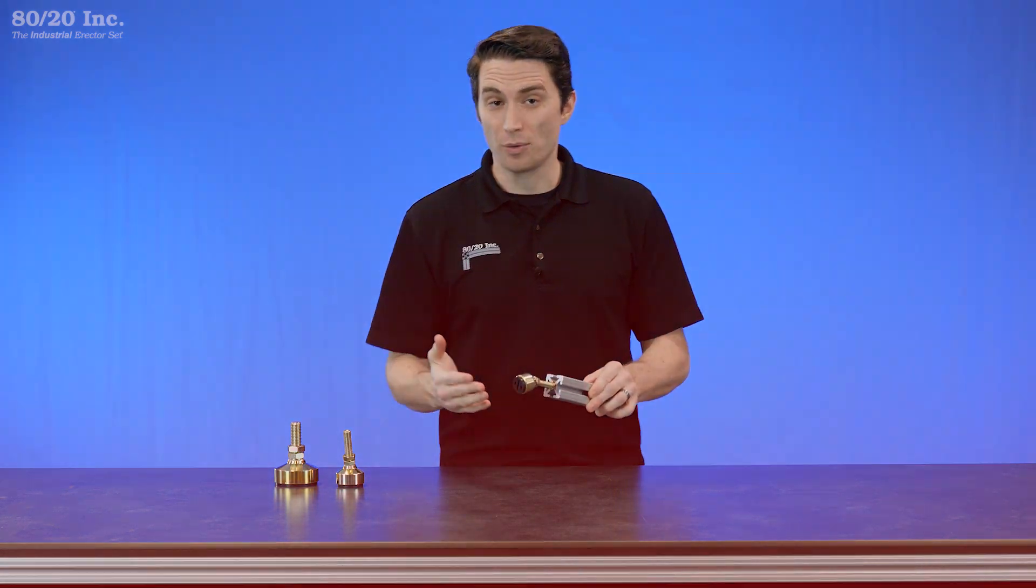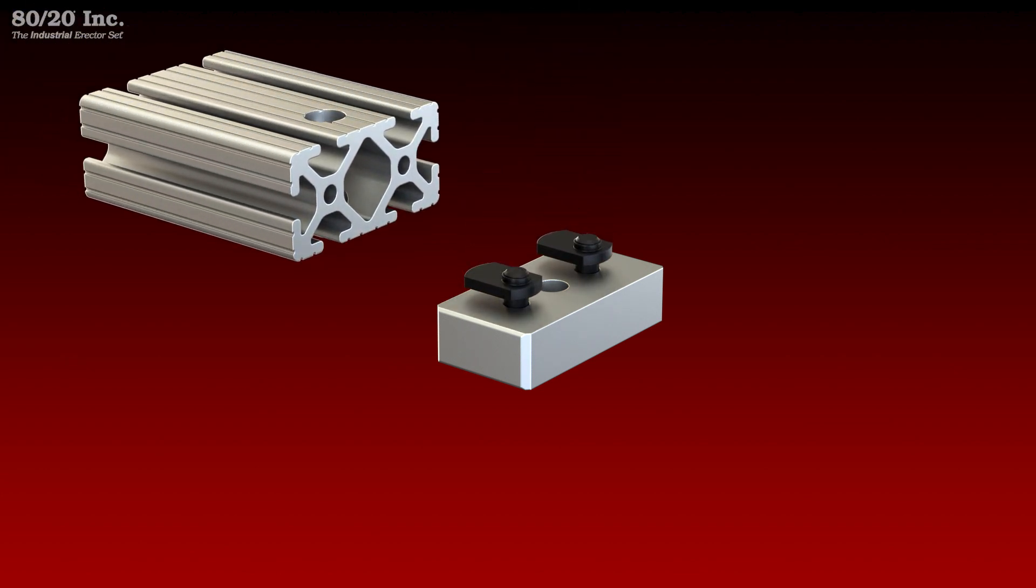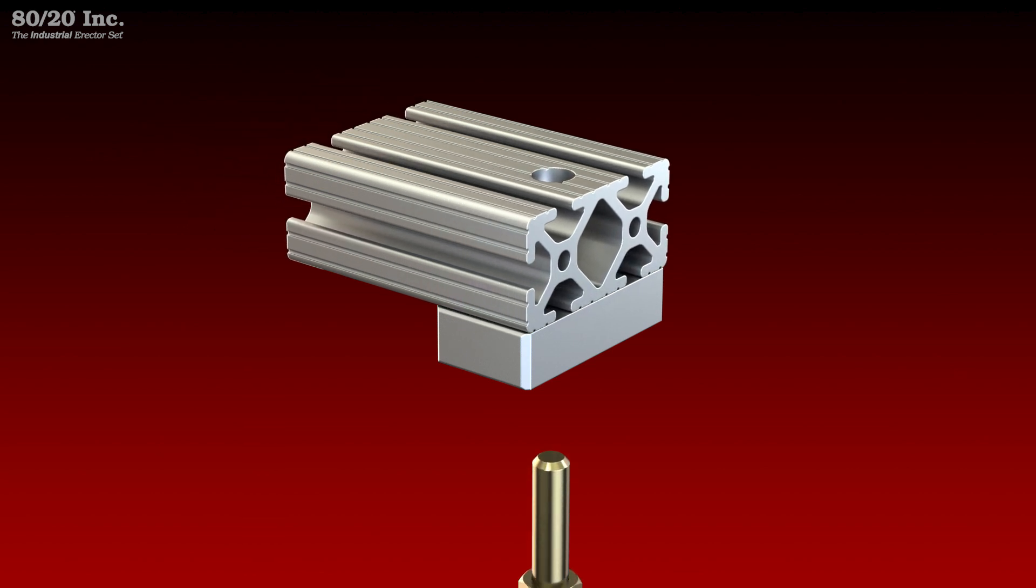When it comes to installing on the side of a profile you'll preload your base plate with bolts and T-nuts and tighten it down on the side of your profile. From there you'll take your mount and feed it into the base plate and lock it into place using the nut.